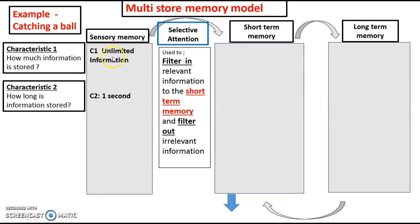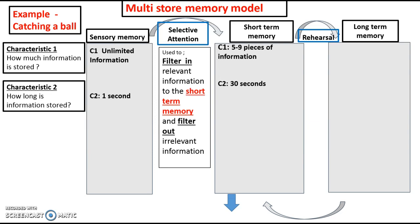We push the information into the short-term memory, going from an unlimited information store into our short-term memory. The short-term memory is the working part of the memory. It can store five to nine pieces of information — that is the kind of limit of it. In A-level psychology they put it as seven plus or minus two. You can store that information in the short-term memory for 30 seconds. Within that 30-second period, if we want to take it into the long-term memory, we have to use the process of rehearsal — going over it in our head, repeating it physically — which allows us to take the information into our long-term memory.